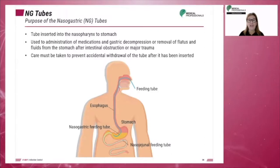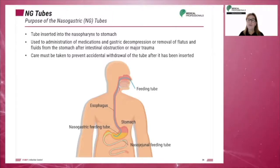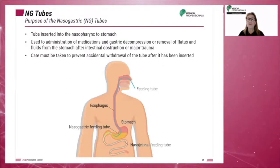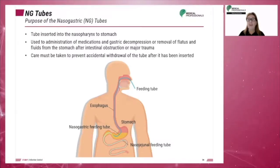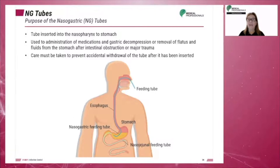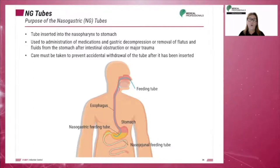Nasogastric or NG tubes are plastic or rubber tubes that are inserted through the nasopharynx into the stomach. The insertion is performed by a physician or nurse. For any NG insertion, the patient must sign a consent form. The NG tube can be used for administration of medications, gastric decompression, or the removal of gas and fluids from the stomach after an intestinal obstruction or major trauma.